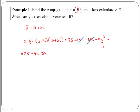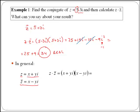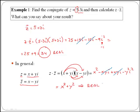Therefore we are left with 25, and then since i squared is minus 1, we have 25 plus 9 which is 34, which is a real number. Now in general, when we have z equals x plus yi and its conjugate z bar equals x minus yi, if we multiply them we get x squared minus xyi plus xyi minus y squared i squared. The imaginary parts cancel each other, and we are left with x squared plus y squared, which is going to be a real number.